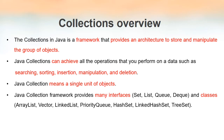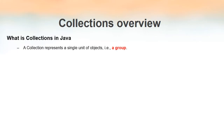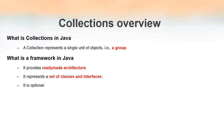Collections in Java means it represents a single unit of objects — a group. We know the word meaning of collections: we often say we have a good collection of books or a good collection of cars, meaning we have a group of books or a group of cars. Similarly, collections in Java means it's a group of objects. We defined that collections is actually a framework.